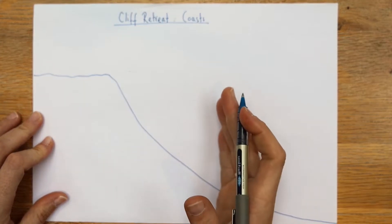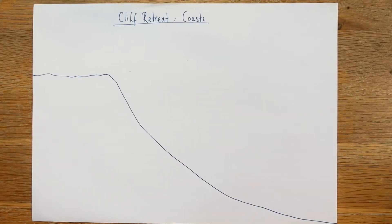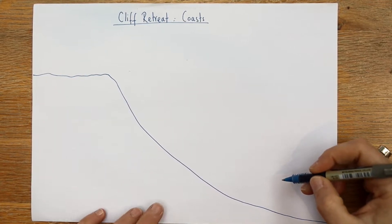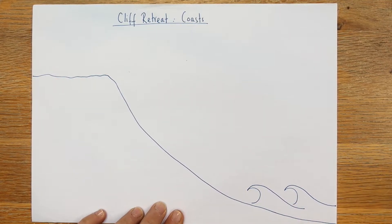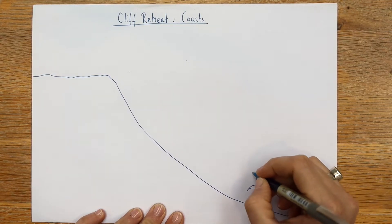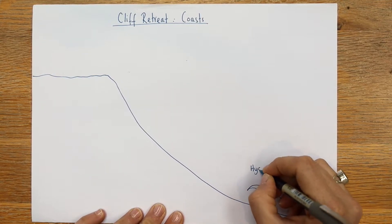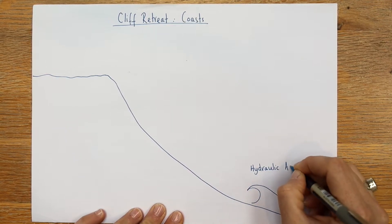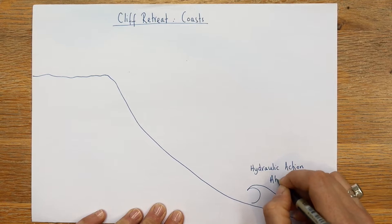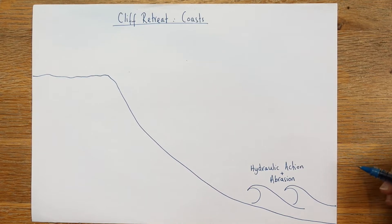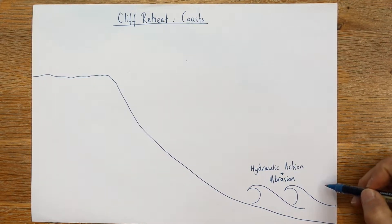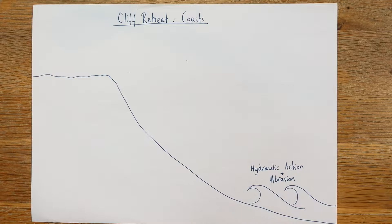Cliff Retreat is essentially a cliff moving and retreating backwards because of the power of the sea. So if we just put some waves in place at the foot of the cliff. Down here we've got processes like hydraulic action and abrasion that you need to know about. Hydraulic action is the force of the water, and abrasion is where the waves have stones and shingle and things inside them.